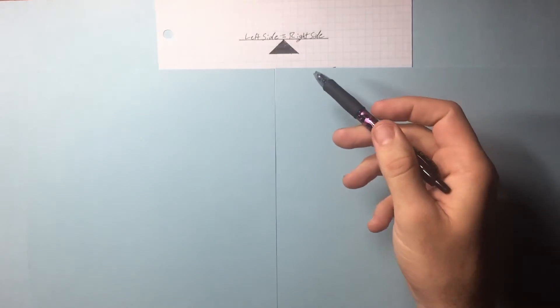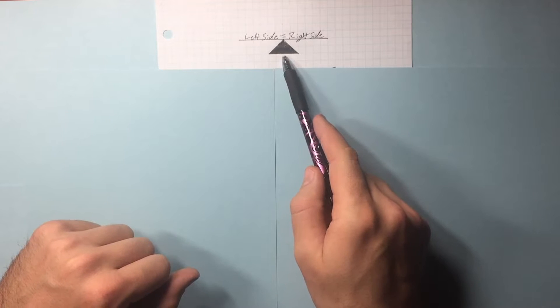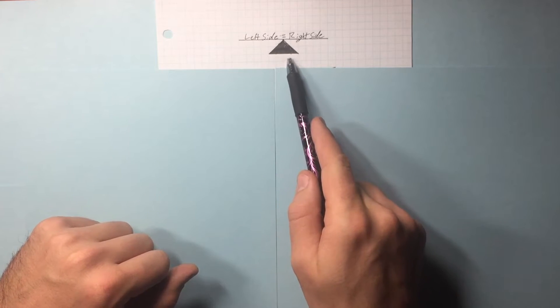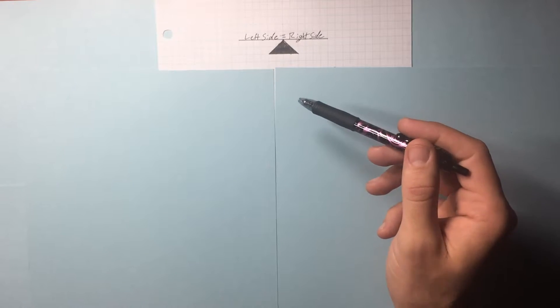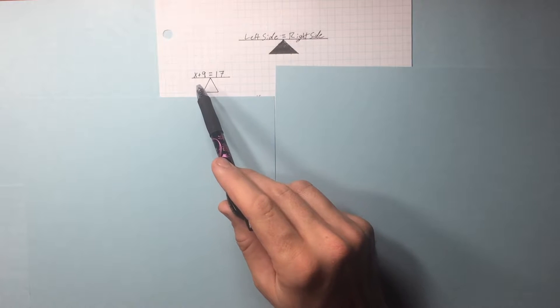Algebra. Algebra is an equation with a variable. A variable is a letter that stands for a number. You're gonna have an equation and you need to treat it like a seesaw. We need to keep our equation balanced when we do algebra and we need to figure out what number this letter stands for. We have to get the letter by itself.